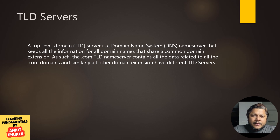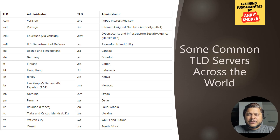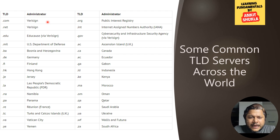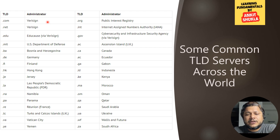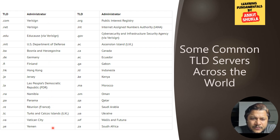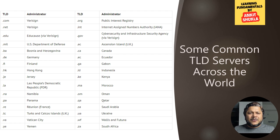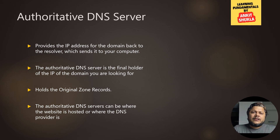Let's look at some common TLD servers across the world. For example, Verizon holds .com and .net — meaning it is the administrator or TLD domain owner of those two domain extensions globally. Similarly, we have .de and others. Different domain names are managed by different organizations or countries across the globe.